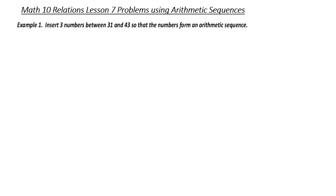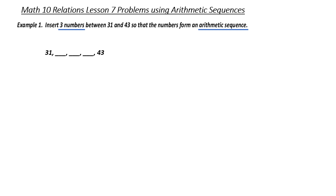Let's break this down. When we're looking at this problem, we know that we're putting in three numbers between 31 and 43. Let's start by creating a visual. We have 31, three numbers in between, and then 43.